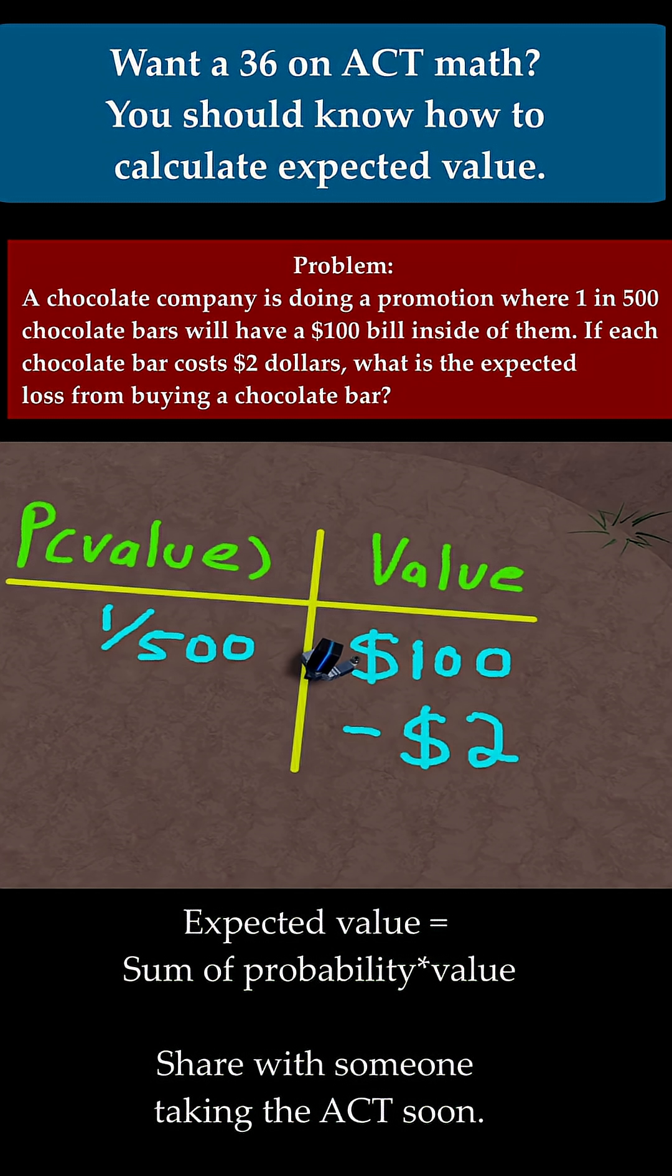And what's the probability of this? Well, if you buy a chocolate bar, we're guaranteed to lose $2. That's how much it costs, unless you're stealing, but I wouldn't encourage that. So the probability of this is 100%, or you can just write that as 1.